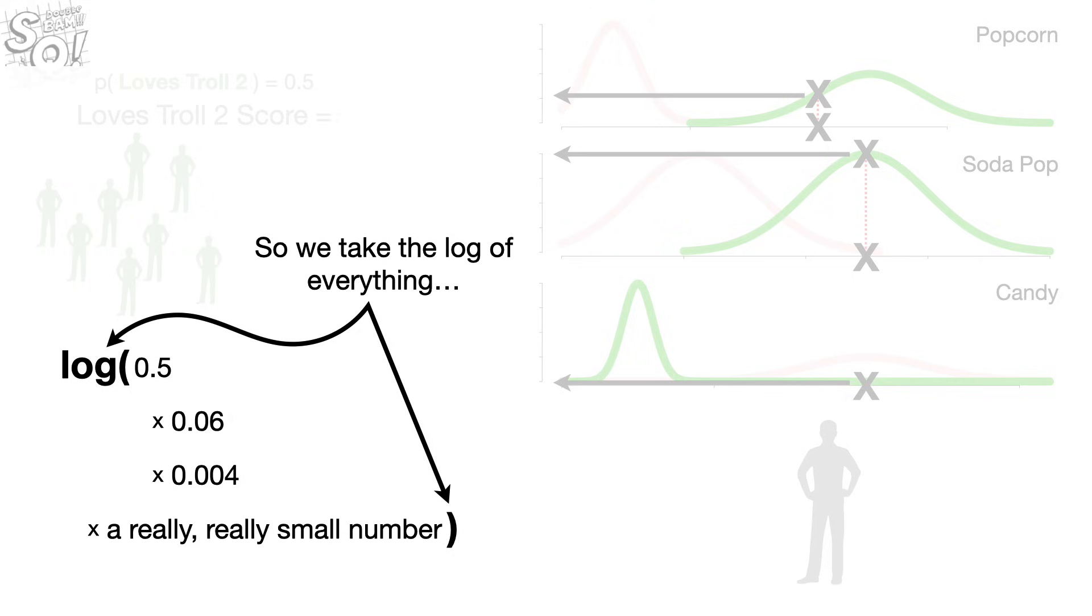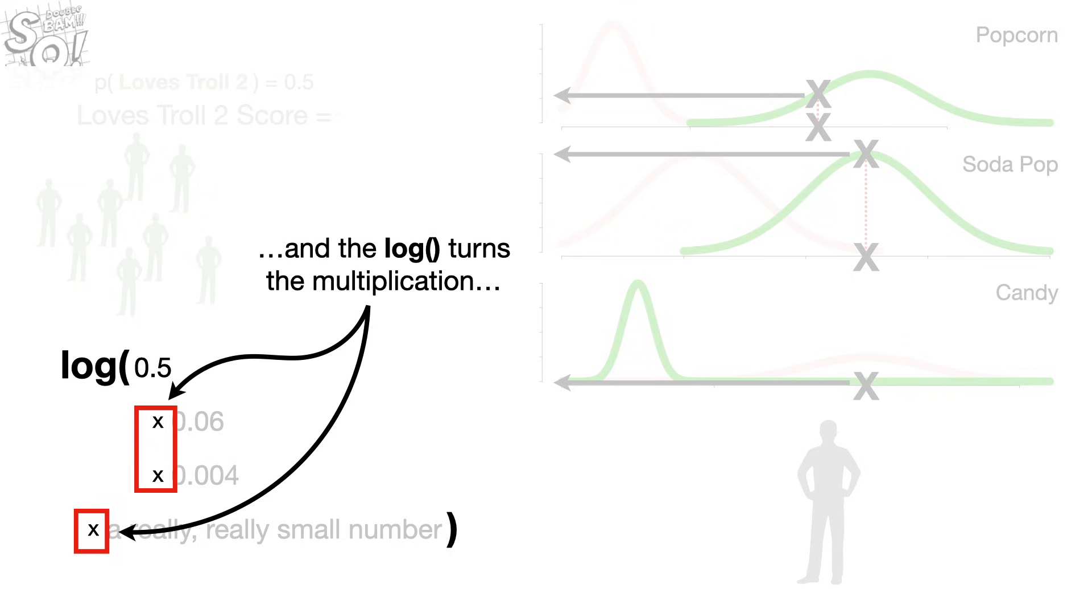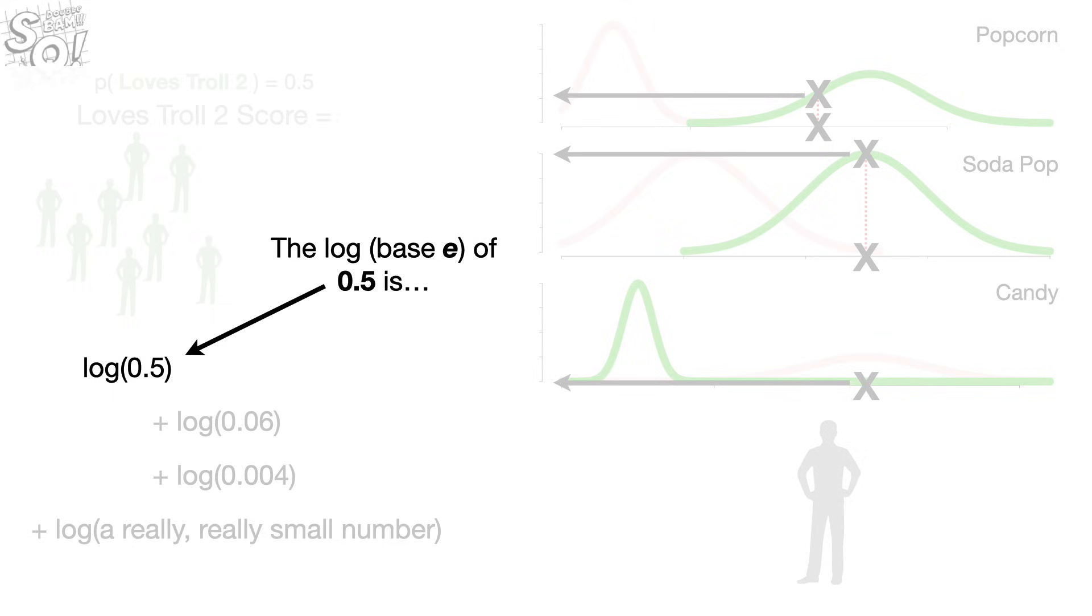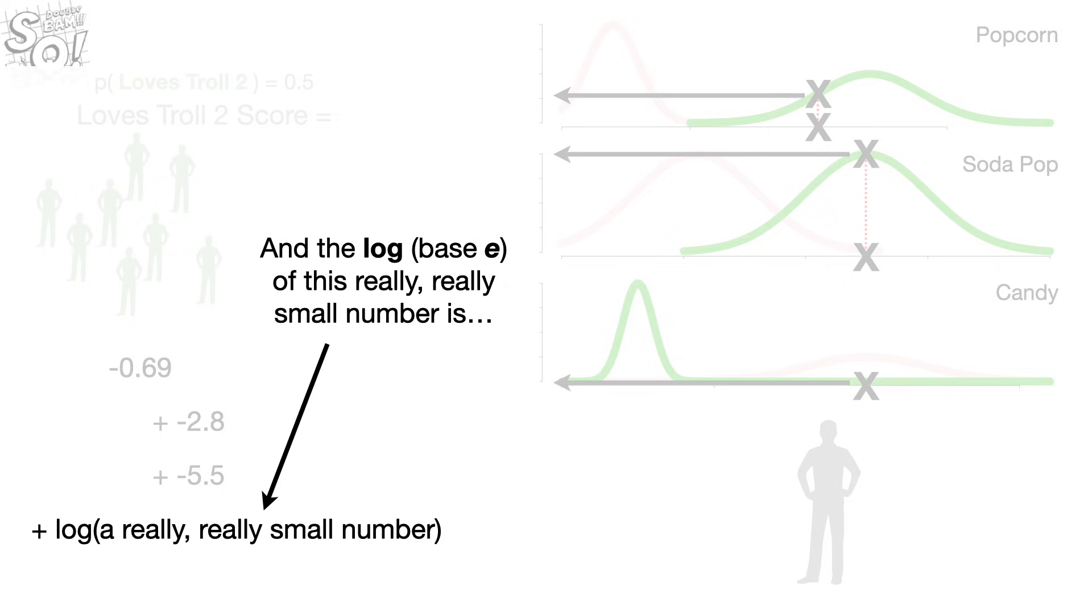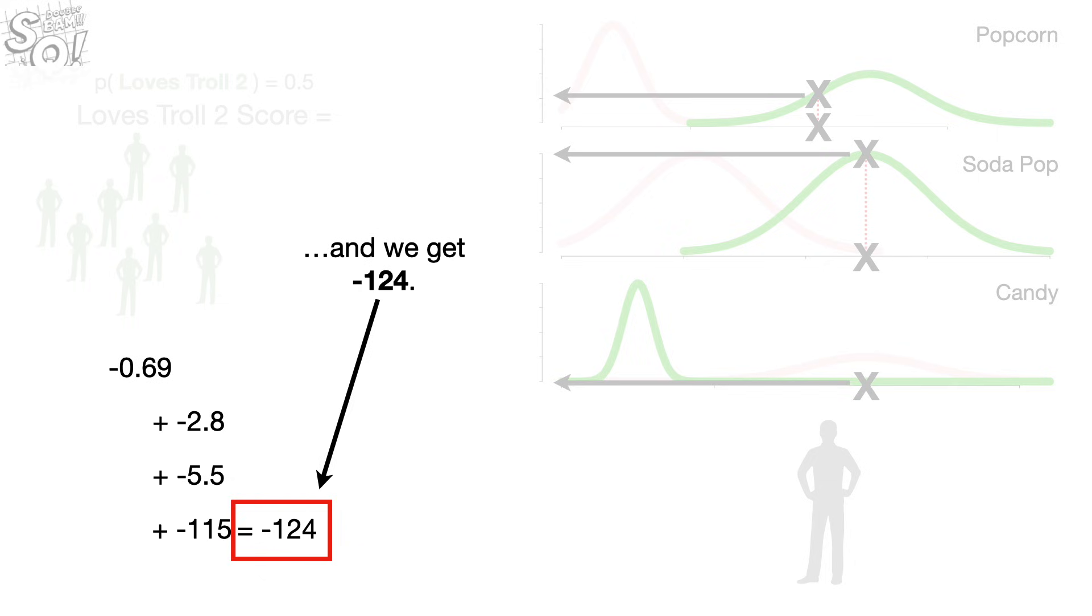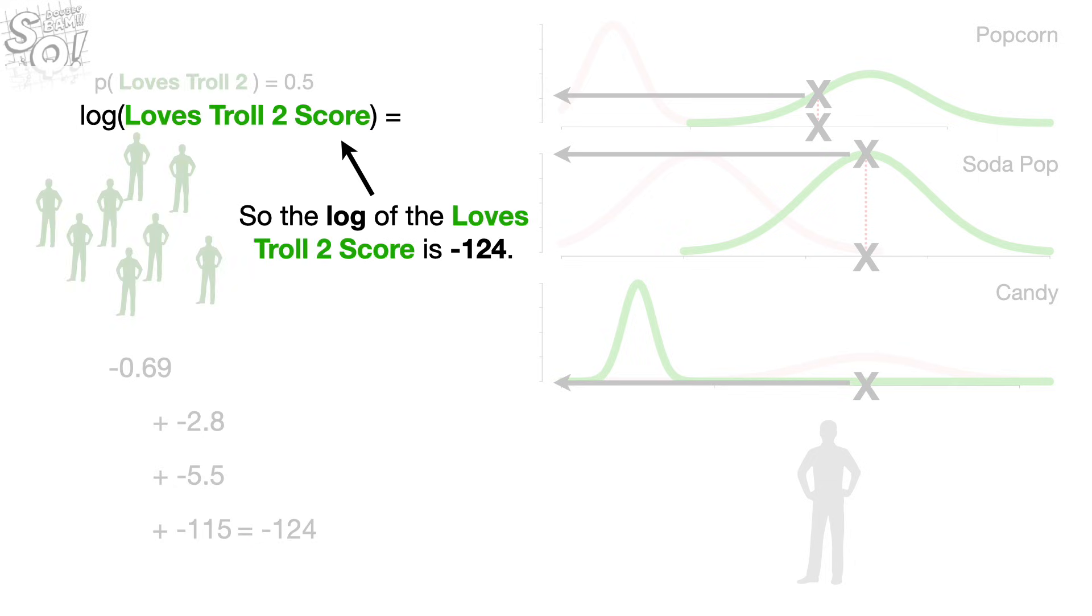So we take the log of everything. And the log turns the multiplication into the sum of the individual logs. The log base E of 0.5 is negative 0.69. The log of 0.06 is negative 2.8. The log of 0.004 is negative 5.5. And the log of this really, really small number is negative 115. Now we just add this up, and we get negative 124. So the log of the Love's Troll 2 score is negative 124. Bam!